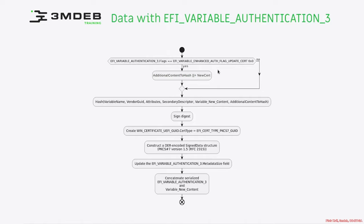If we have the enhance-out flag update set flag set, then we have to provide a new certificate as additional content to hash — we concatenate it into our additional content to hash. If the flag is not set, then we just move forward to hashing.